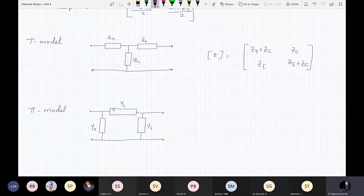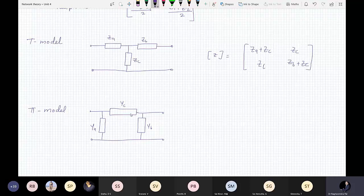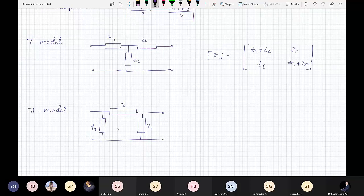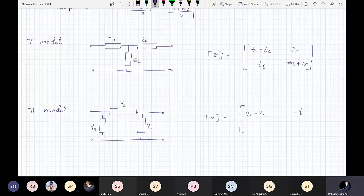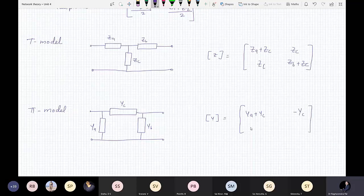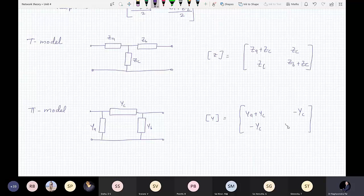Now, why it is called YA, YB, YC? Because in this particular model, there is a direct formula for calculating Y-matrix. So it is YA plus YC, similar to this only. Here only minus sign will come: minus YC, minus YC, and YB plus YC.